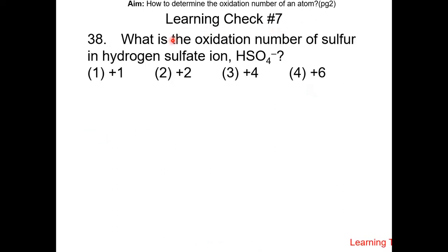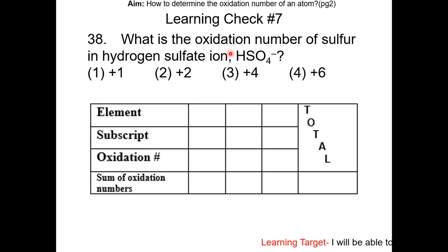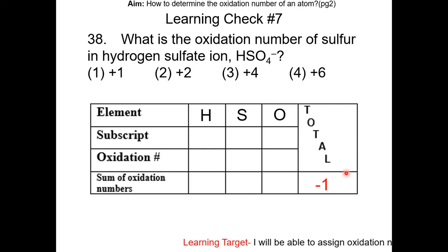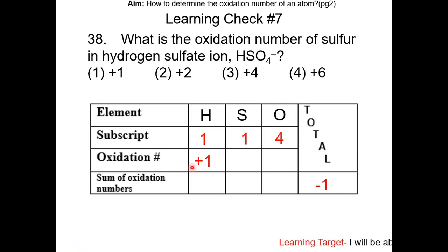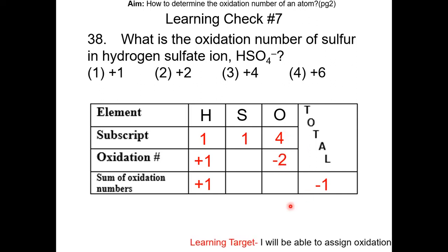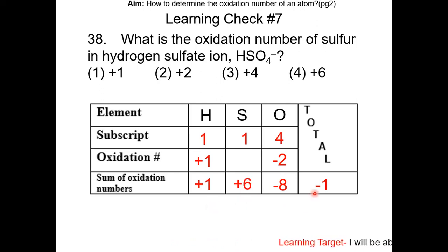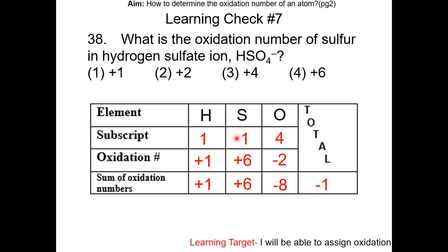Learning check number seven: what is the oxidation number of sulfur in the hydrogen sulfate ion? The sum of oxidation numbers in a polyatomic ion equals the charge, so the total will be −1. Hydrogen has a subscript of one, sulfur has a subscript of one, and oxygen has a subscript of four. Since sulfur has multiple possible oxidation states, we work on it last. Hydrogen is +1, so its sum is +1. Oxygen is −2, so its sum is −8. Therefore, sulfur must be +6 so that the total equals −1. The answer is choice four.